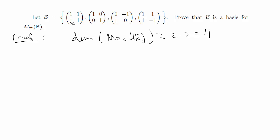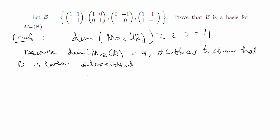The thing with dimension is that the matrices do have to be linearly independent. We haven't yet proved that the dimension of B is 4, but we can say: because the dimension of M₂₂(ℝ) is 4, it suffices to show that B is linearly independent. If B is linearly independent then its dimension is 4, so B will span M₂₂(ℝ) and be linearly independent, and by definition will be a basis. So now we just have to show that the set B is linearly independent.